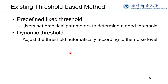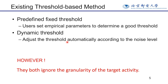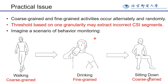The most common activity segmentation method used in Wi-Fi sensing is the threshold-based method. Existing works use a pre-defined fixed threshold to extract activity. Users need to set empirical parameters to determine a good threshold. Some work has improved on this basis, using dynamic thresholds adjusted automatically according to the noise level. However, both approaches ignore the granularity of the target activity.